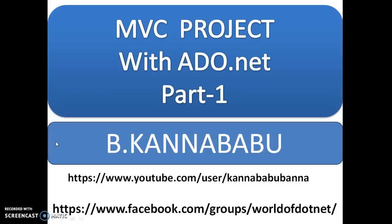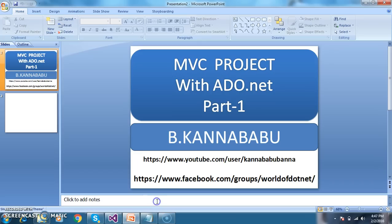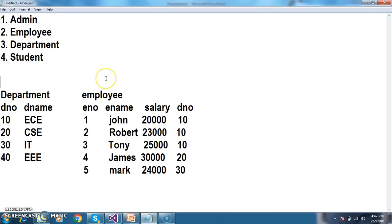Hi, this is Kanababu. In this video, we will discuss and develop a sample basic project in MVC with ADO.NET. Initially in this project, let us assume that there are four modules. The title of the project you can confirm later from College Information System. Basically, this project contains four modules.